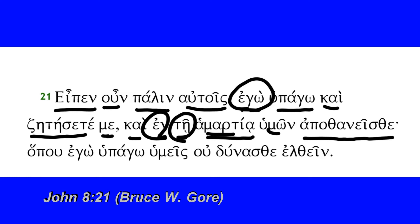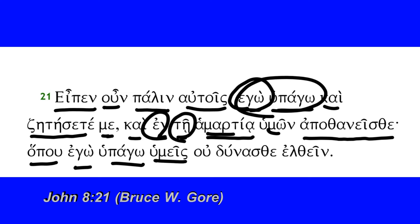He says 'hopou,' adverb meaning where. 'Ego hupago' — where I go, the same construction as before. 'Humeis,' you, with emphasis — so you, second person nominative plural. 'Ou dunasthe' — you are not able, from 'dunamai,' I am able — second person plural, present active indicative, with the negation in front of it — you are not able. 'Elthein,' to come — the infinitive of 'erchomai,' I come or I go. So where I go, you are not able to come.